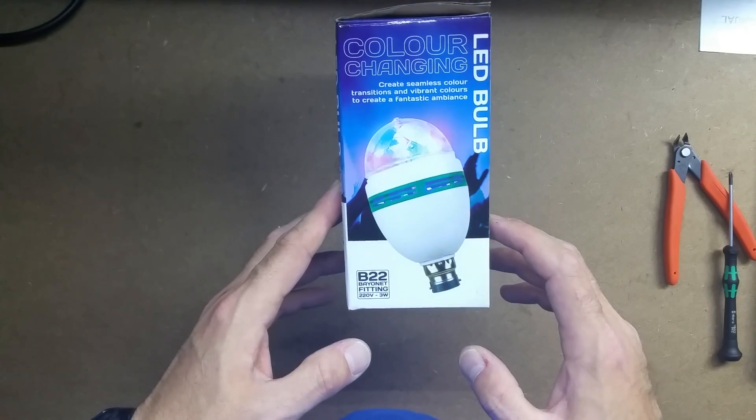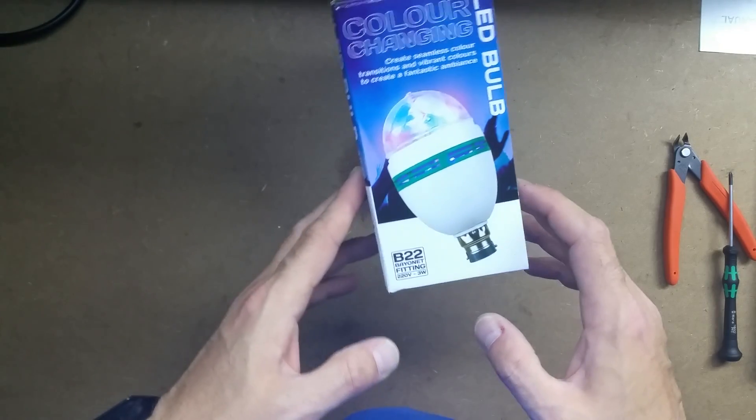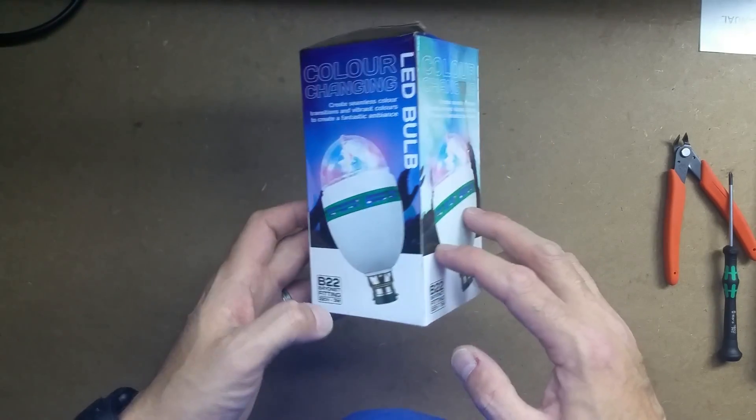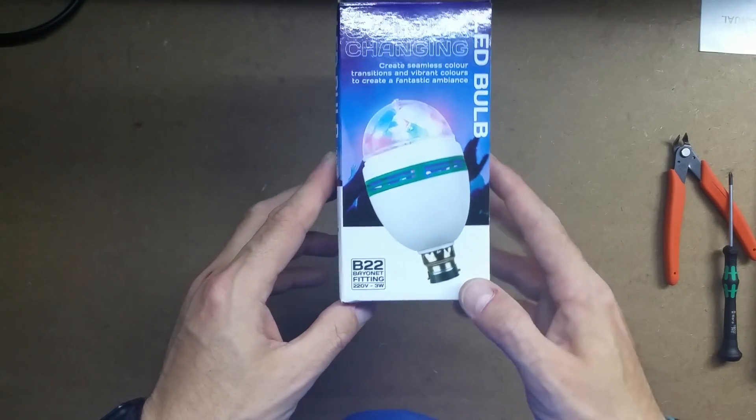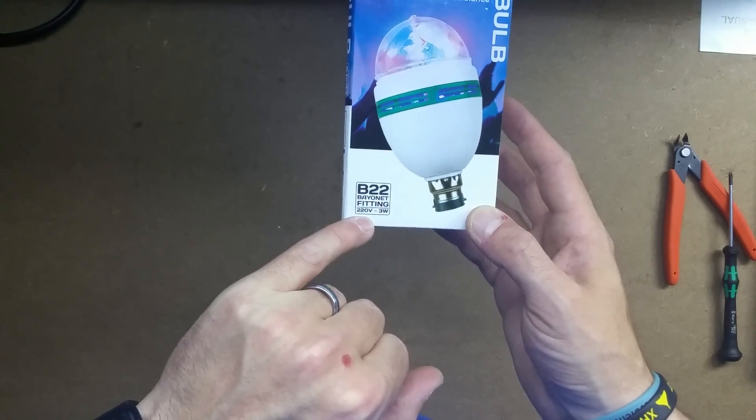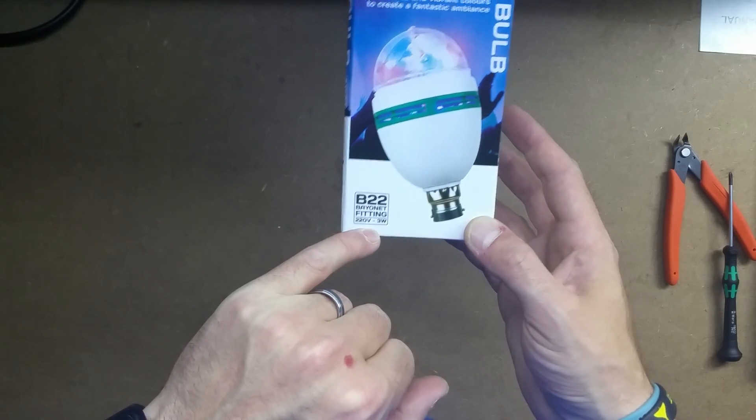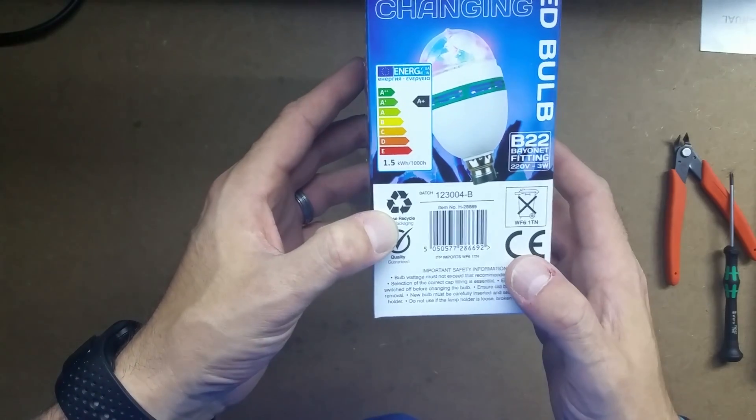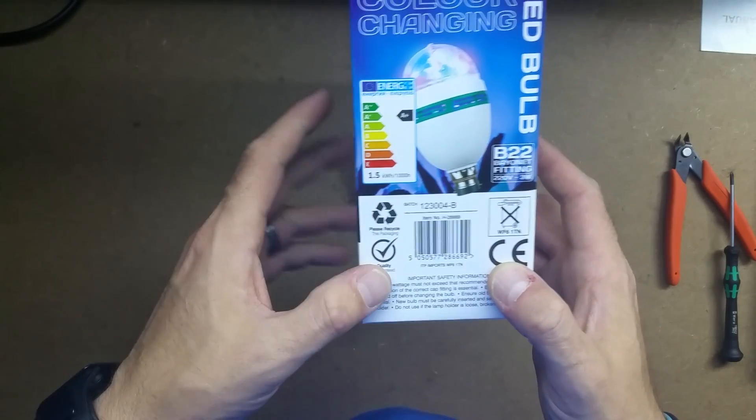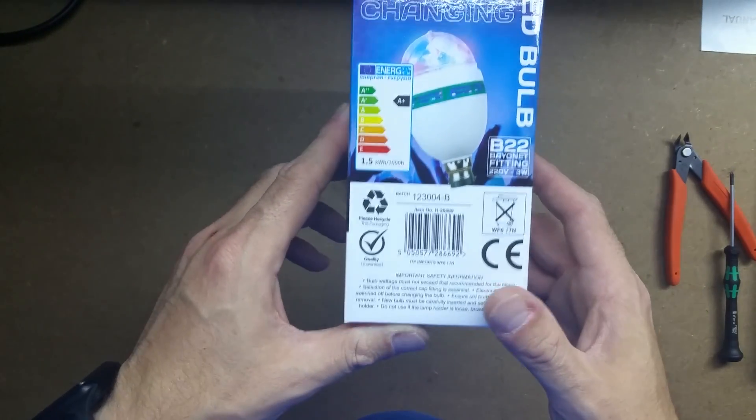This is a color changing LED disco bulb which came from Poundland. Funnily enough it was a pound. This one has a standard UK style bayonet fitting, claims to be 3 watts, but we'll have a look. It is A plus energy rated, so run it all day.